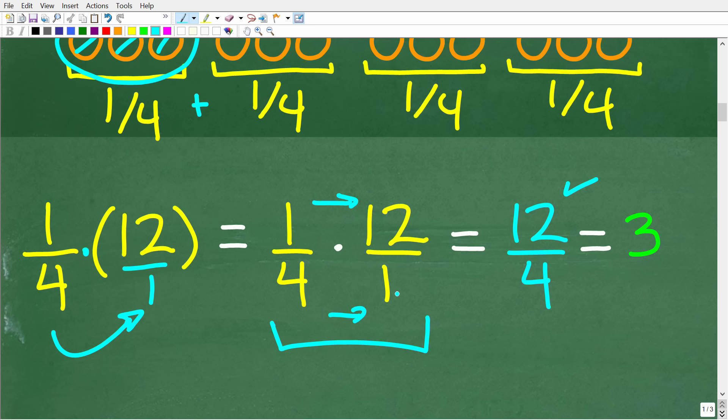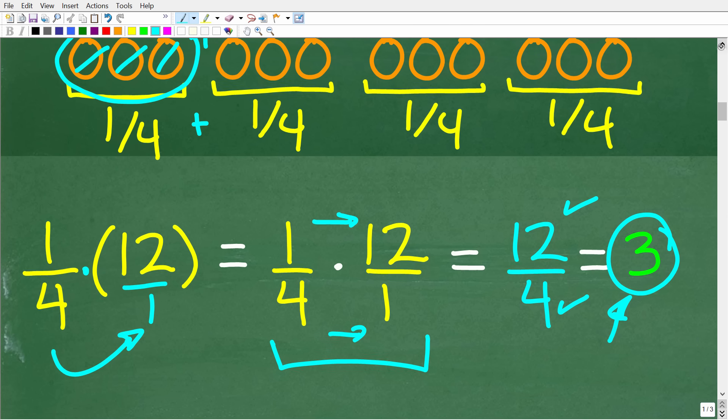So 1 times 12 is 12. 4 times 1 is 4. So we have 12 divided by 4, which is 3. Okay, so if you give away three apples, that's one-fourth of the total.